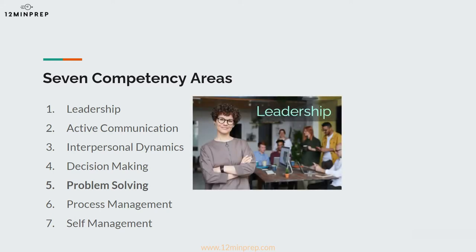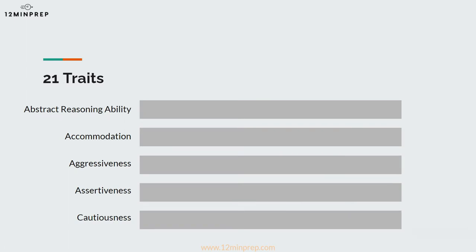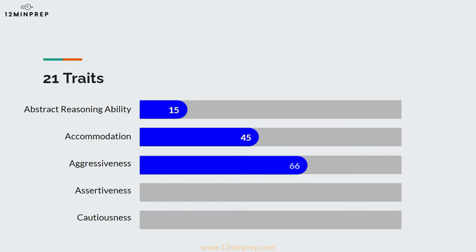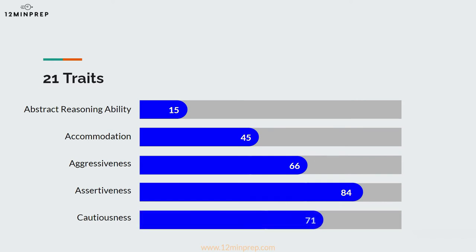For example, they may focus more on leadership for a managerial role. If they're hiring a nurse, they may focus more on interpersonal dynamics. Your more detailed score report will further break down your score into 21 traits, with an individual score for each trait. As with the competencies, the importance of each individual trait may vary depending on the candidate and the position you're applying for.